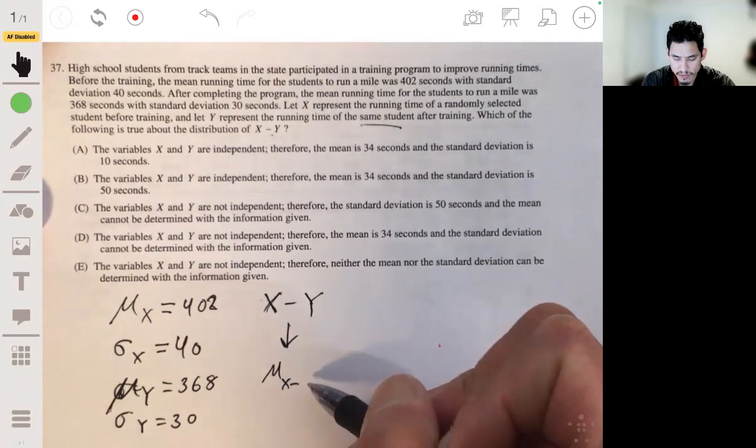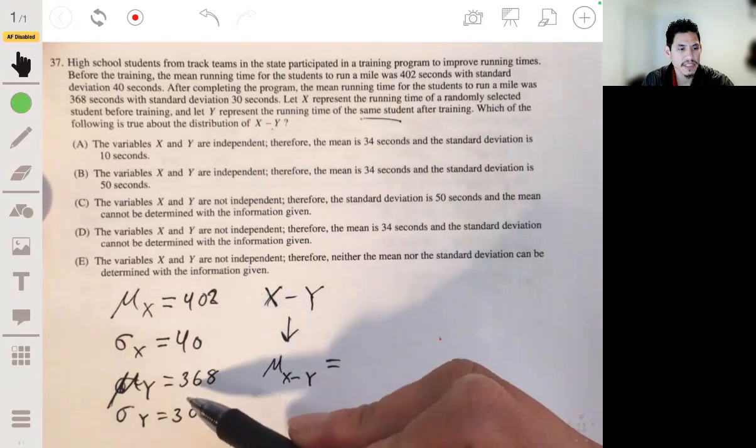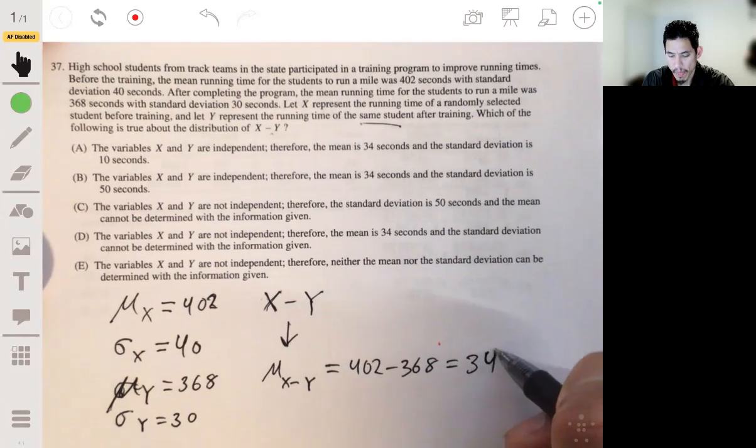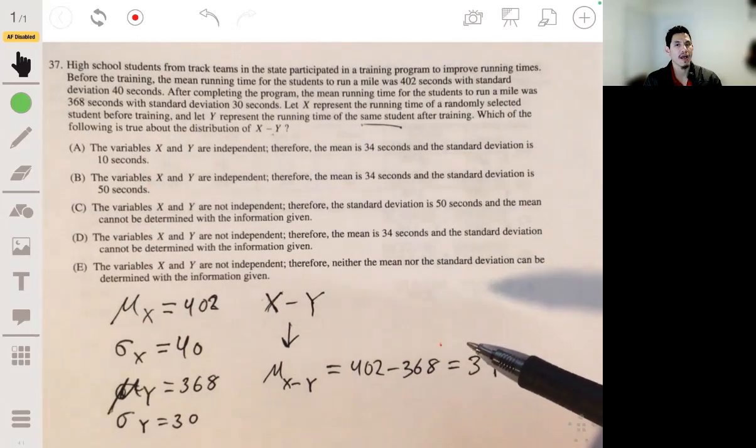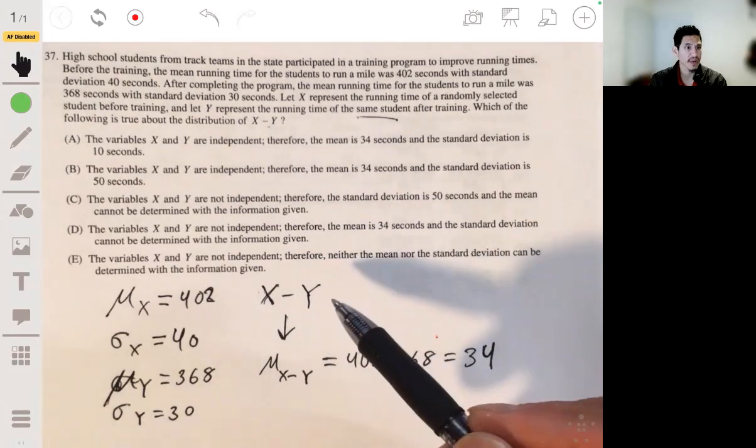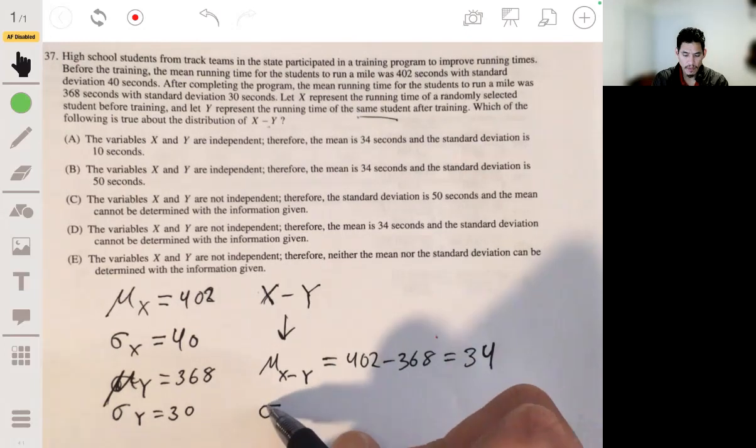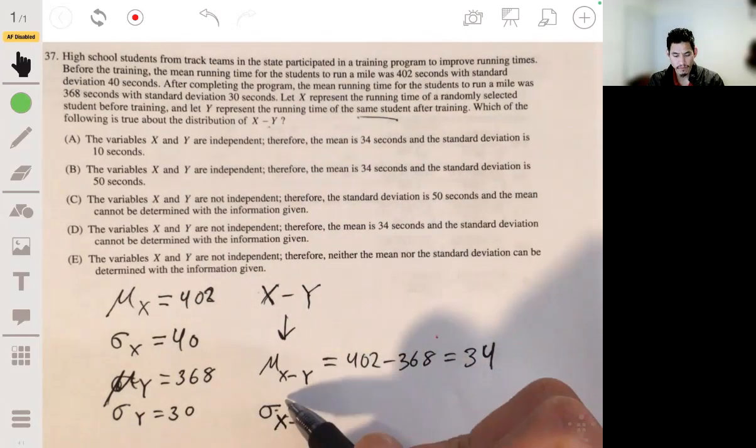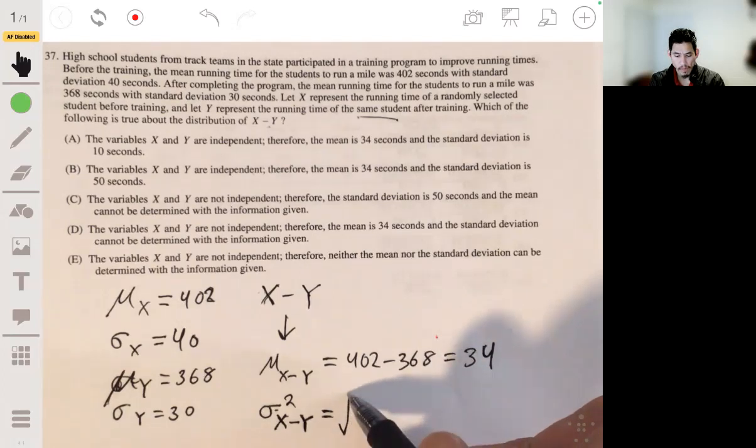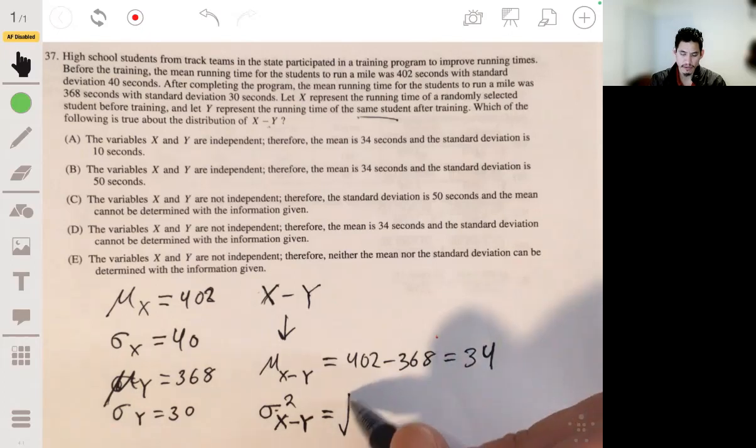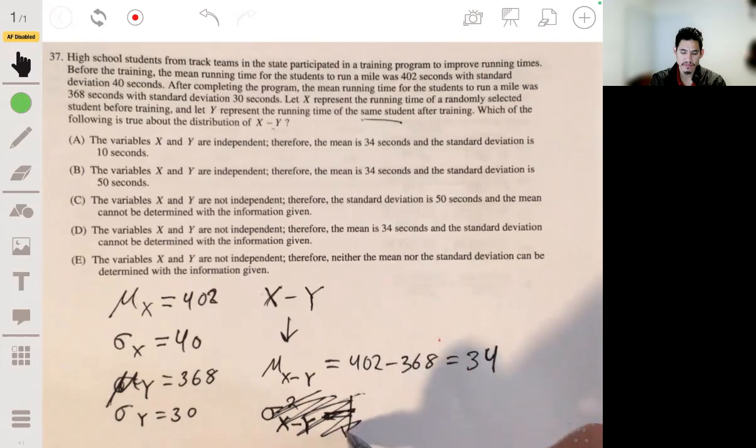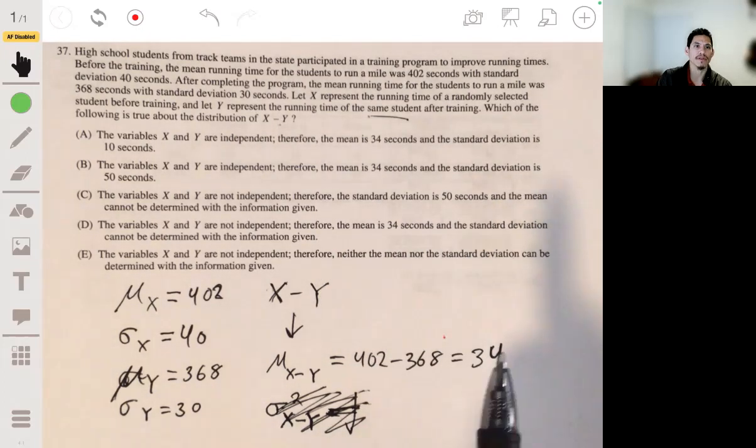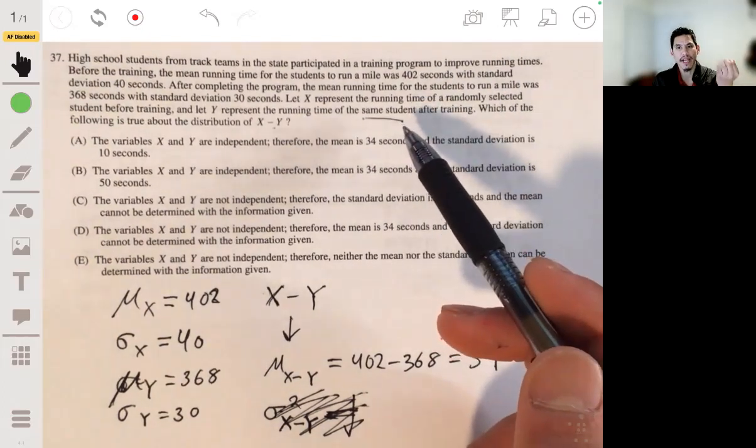So the mean of x minus y would be equal to the mean of x minus the mean of y, or 402 minus 368, which would be 34. Now, if x and y weren't independent, the standard deviation for the variance of x minus y... Actually, I don't need to waste time with this. Variance or standard deviation of a difference can't be determined when you have variables that could be related, meaning are associated.